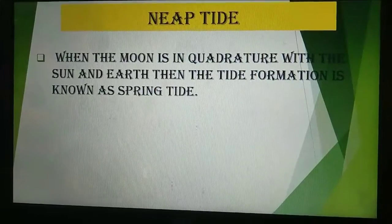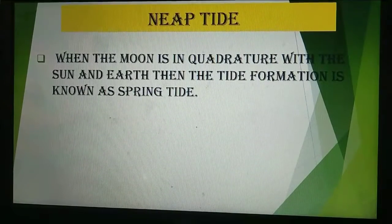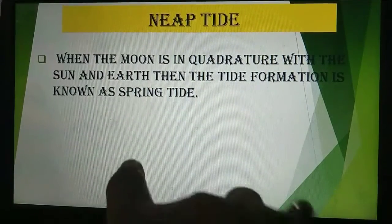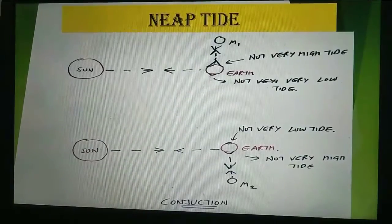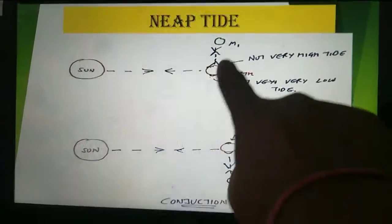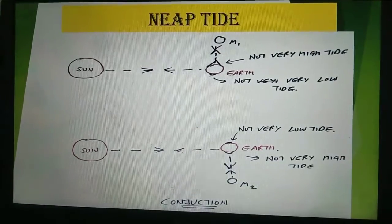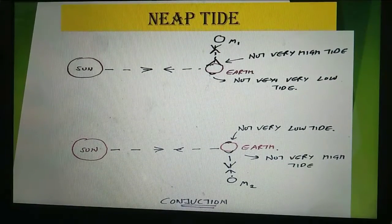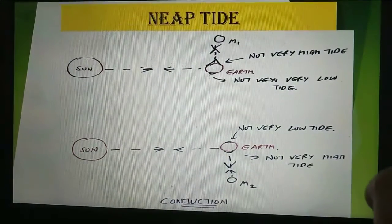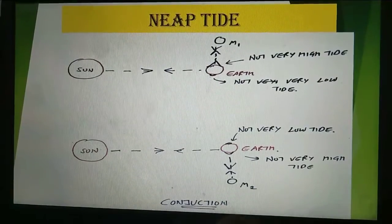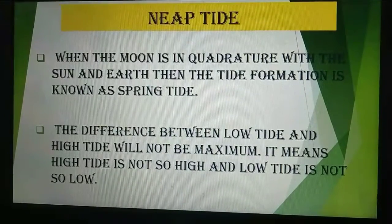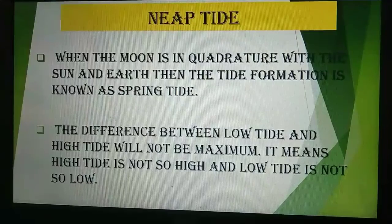On the other hand, in the neap tide, when the moon is in quadrature with the sun and the earth, then the tide formation is known as neap tide. Quadrature means the angle formed at the earth is 90 degrees — when the moon and the sun make an angle of 90 degrees at the earth, it is known as quadrature. Due to quadrature, the highest tide is not as high and the lowest tide is not as low. So the difference between the low tide and the high tide will not be maximum — the high tide is not so high and the low tide is not so low.